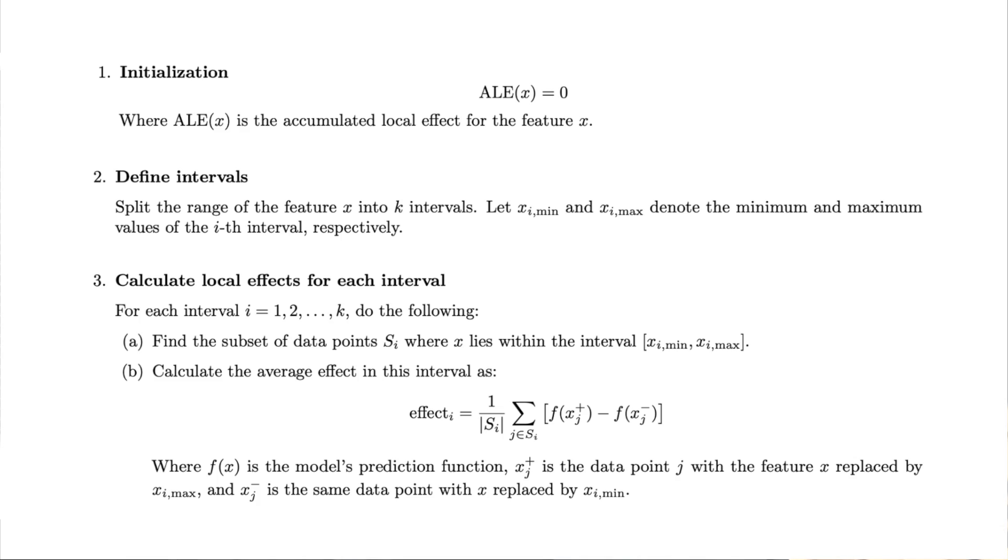Different implementations may have slight variations on this algorithm. For example, for step two, we will see that the ALE value implementation will define the intervals so that a minimum number of features will be included in each interval. It is also possible to define them using a constant width for each interval. Okay, so hopefully this theory will become more obvious when we put it into practice.